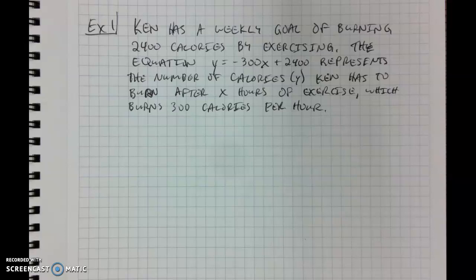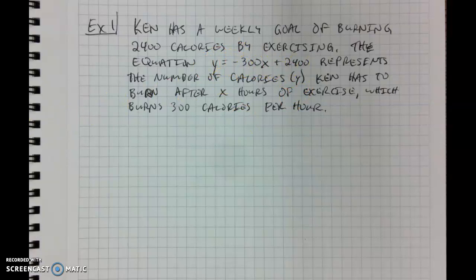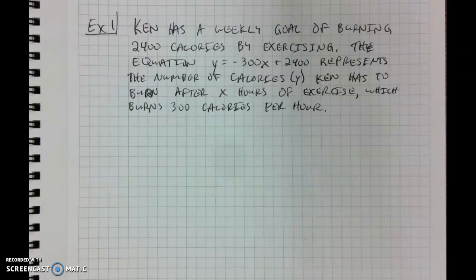In this example, we want to do two things. First, we want to actually graph this scenario. We have our equation y equals negative 300x plus 2,400, and we want to graph that using quadrant 1 — that's the upper right quadrant of our coordinate grid. And then we also want to be able to analyze and find some information from the graph that we create.